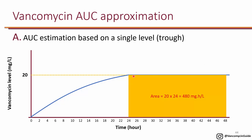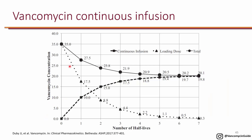The problem with continuous infusion is that during the first 24 hours it takes a long time to reach steady state, so you are under-dosing for the first 24 hours. This can be fixed by giving a loading dose. Without a loading dose you get a slow rise; with a single loading dose followed by continuous infusion, you get an initial peak and then a flat line after 24 hours, which is the best approach to achieve the right AUC.